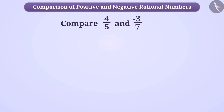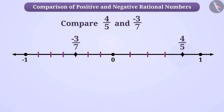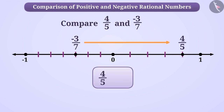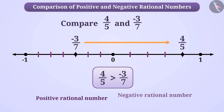Now let's compare a positive and a negative rational number. In the previous video, we saw that the positive rational number 4/5 is to the right of the negative rational number -3/7 on the number line. Therefore, 4/5 is a greater rational number than -3/7. In general, we can say that any positive rational number is always greater than any negative rational number.